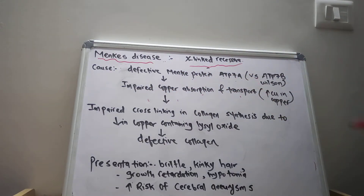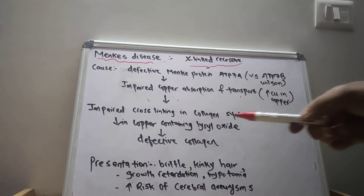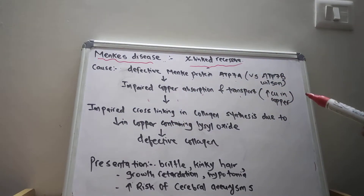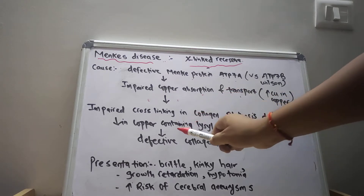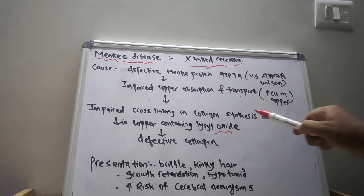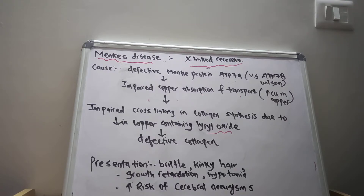If there is a defect in copper absorption and transport, there is impairment in the cross-linking of collagen synthesis due to a decrease in copper-containing lysyl oxidase. As a result of this decrease in copper-containing lysyl oxidase, there is no proper cross-linkage.